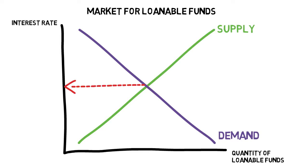Where demand equals supply we have an equilibrium in the market. This is the going interest rate that equates the supply of loanable funds to the demand for loanable funds — we call this r. The quantity at that point is termed q, the quantity of loanable funds. This interest rate will adjust to balance off demand and supply in the loanable funds market.